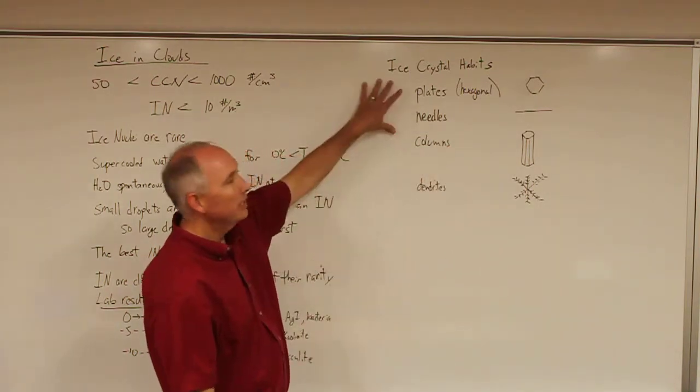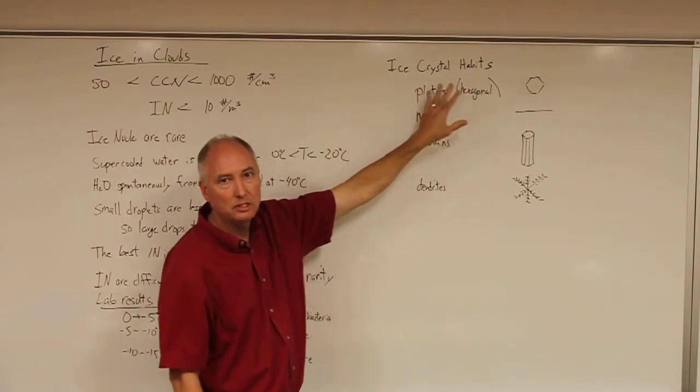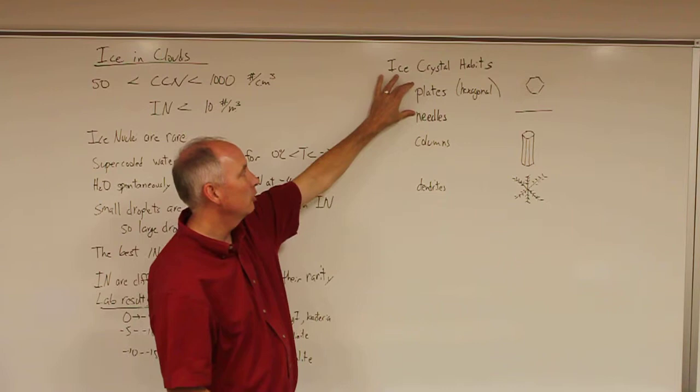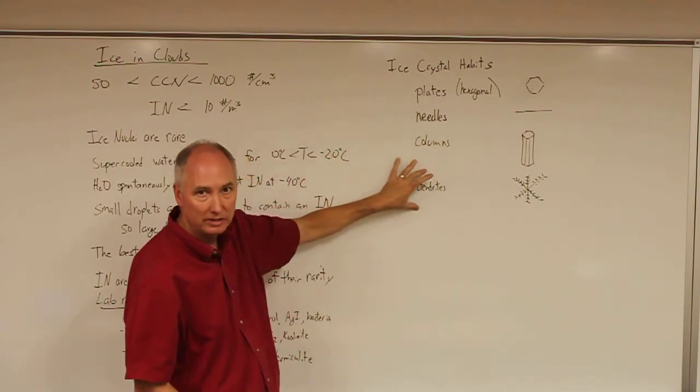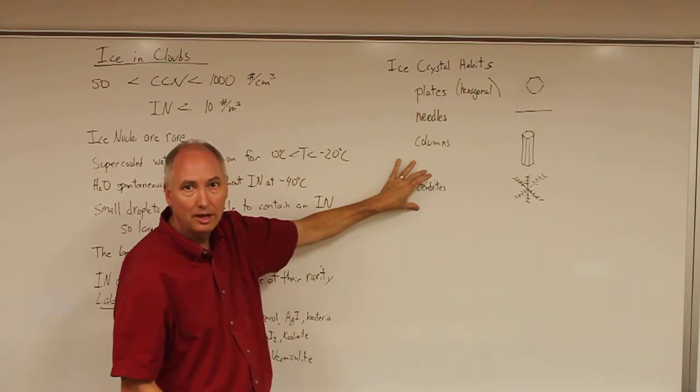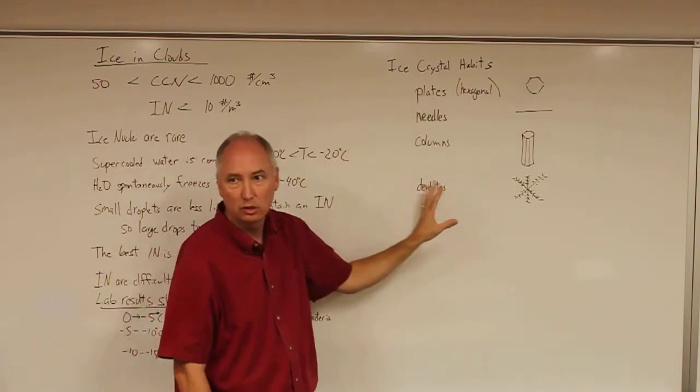The other thing we know about ice crystals is that they have certain habits. Habits refers to crystal shape. We have hexagonal plates, needles, columns, and dendrites. I'm going to show you some PowerPoint slides to demonstrate what these actually look like.